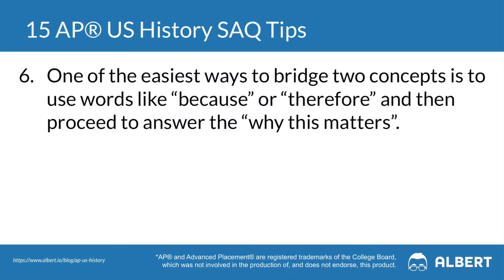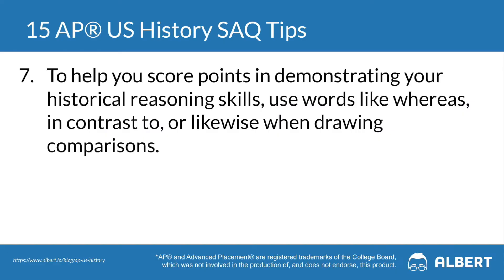Tip six relates to the last tip: one of the easiest ways to make sure you're being specific is by using the words 'because' and 'therefore.' What happens after those two words is your explanation, so by using these words you can always make sure that you are showing the why to your reader. Tip seven: when you're trying to draw a comparison, you can use words such as 'whereas,' 'in contrast to,' or 'likewise' to cue your reader in that you are attempting to demonstrate this historical reasoning skill.